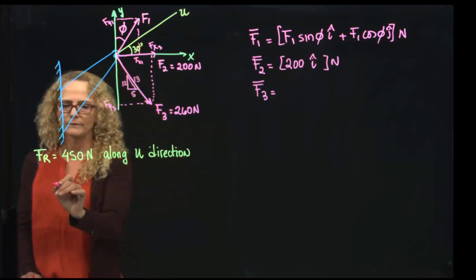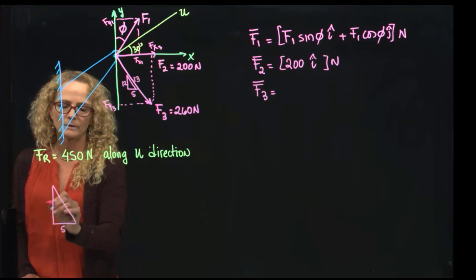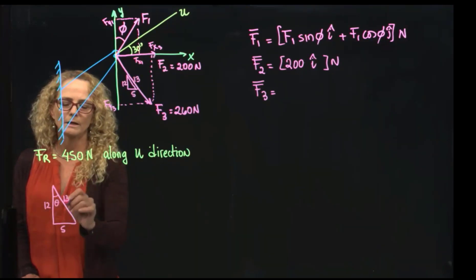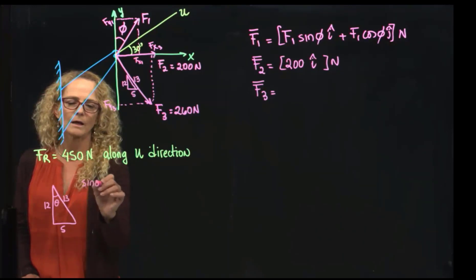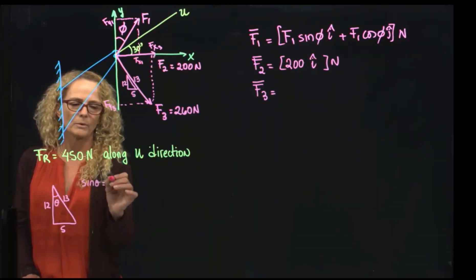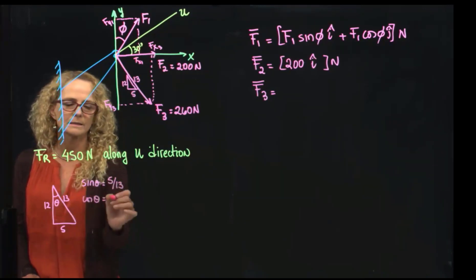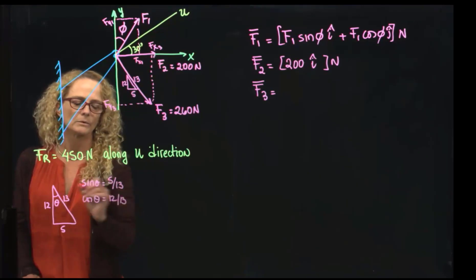So when you have that kind of triangle where this is 5, this is 12, and this is 13, this angle over here, we can say that the sine of this angle is the opposite divided by the hypotenuse, and the cosine will be the adjacent divided by the hypotenuse.